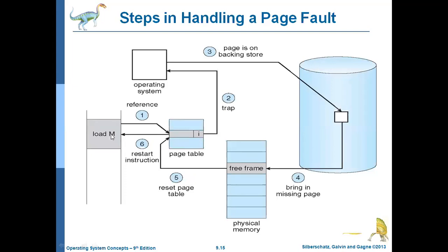The block diagram demonstrates this: the first reference is 'load M.' The page table is checked — initially it has 'I,' meaning invalid reference, so it is a page fault and gets trapped. The operating system identifies this. The page is in the backing store, so the missing page is brought from the backing store into physical memory when a free frame is found. Once allocated, the page table is reset from 'I' to 'V.' Then the instruction is restarted.